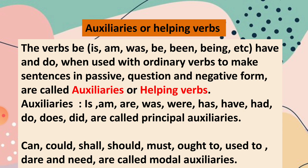So the verbs to be forms, has and do, when used with ordinary verbs to make sentences in passive, question and negative form, are called auxiliaries or helping verbs.